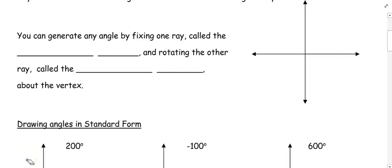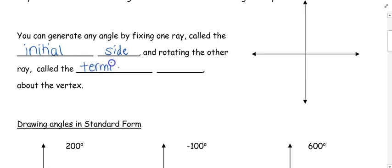Hi! Today we are going to be looking at how to graph angles. You can generate any angle by fixing one ray — we're going to call that ray the initial side — and rotating the other ray, called the terminal side. So where we start and where we end.